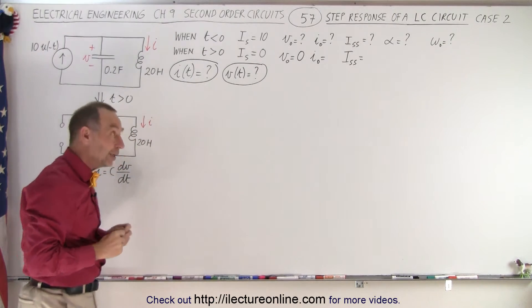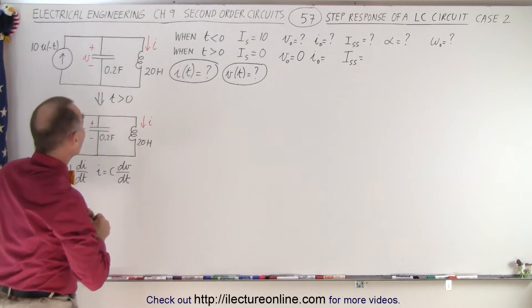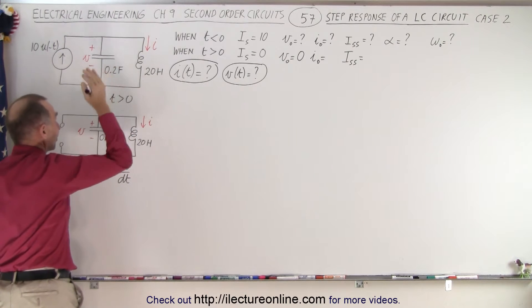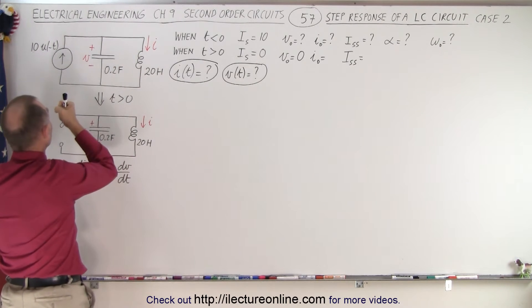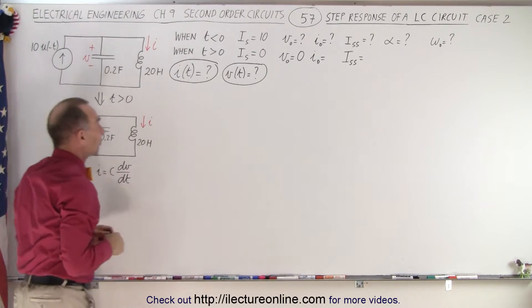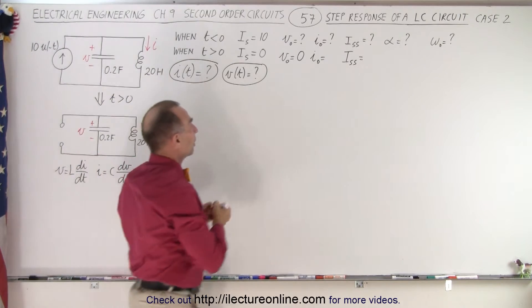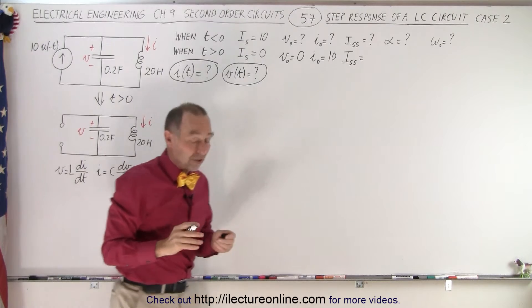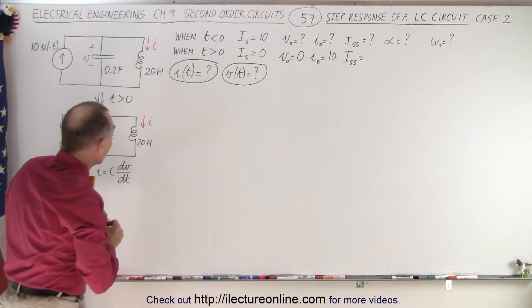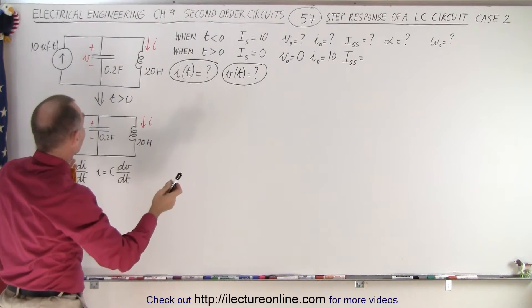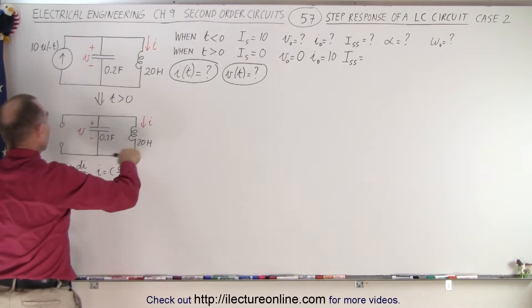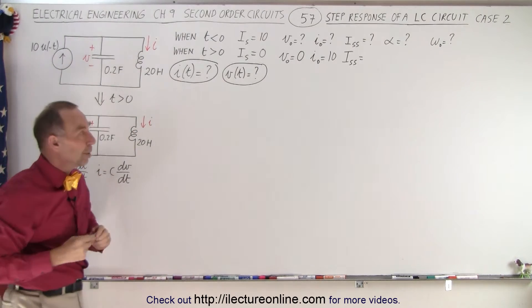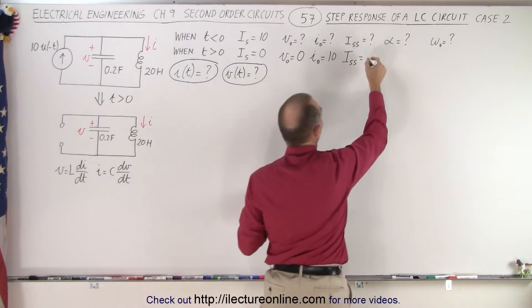What about the initial current? Well, it will not be zero because current has been flowing. 10 amps of current has been flowing through the inductor. So at time equals zero, when we remove the source, the inductor will have a current flow of 10 amps. And what will be the steady-state current? It turns out there will not be a steady-state current, because once you remove the source you simply have current oscillating back and forth — that will be equal to zero.